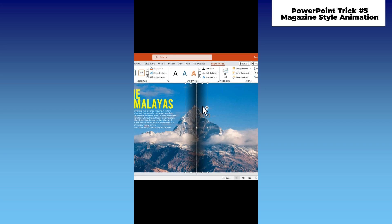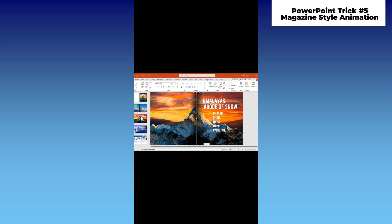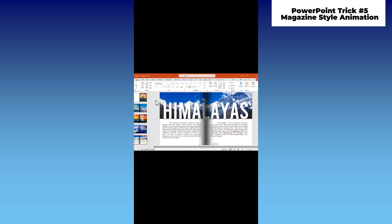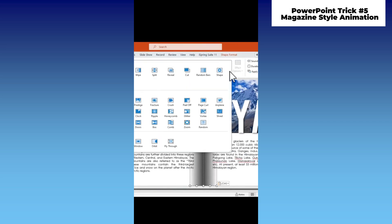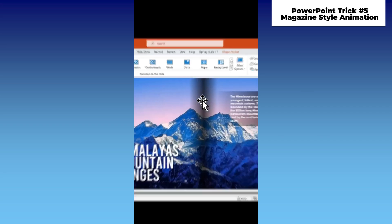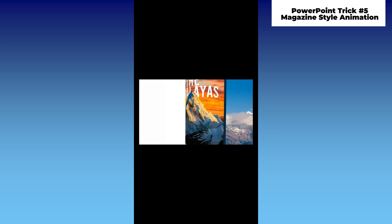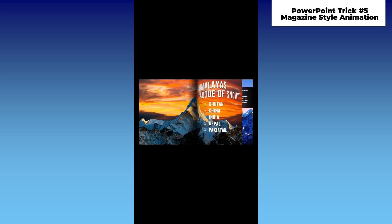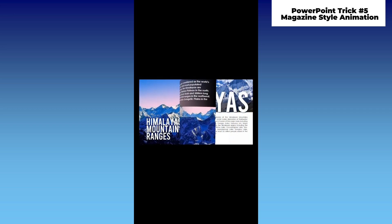Copy these shapes and paste them onto the next slides. Lastly, apply the Page Curl transition. Then boom! You have a very nice magazine-style presentation. Comment below if you want more cool PowerPoint tutorials. Follow for more.